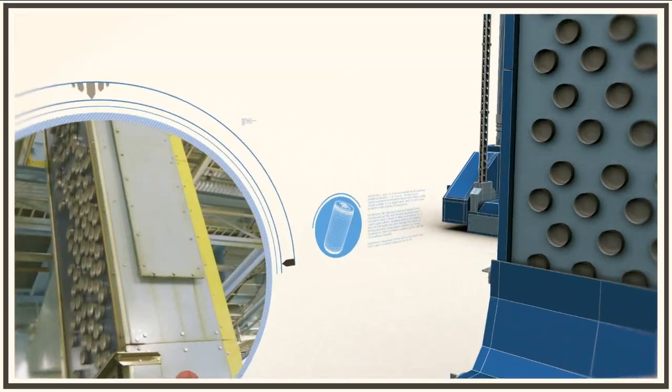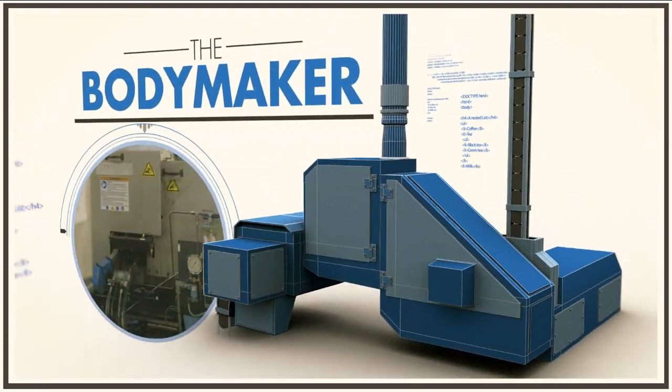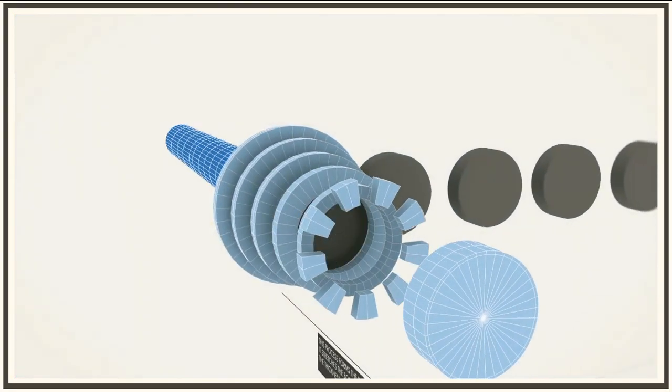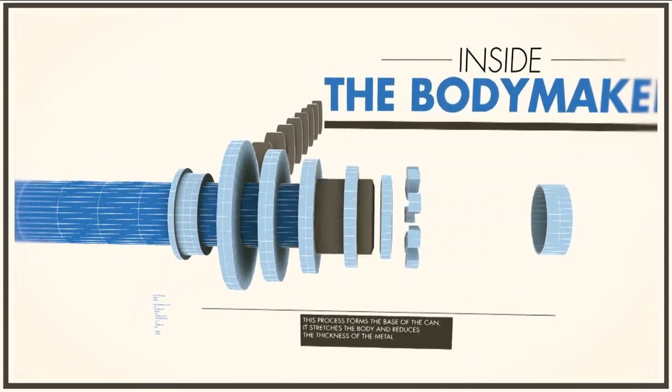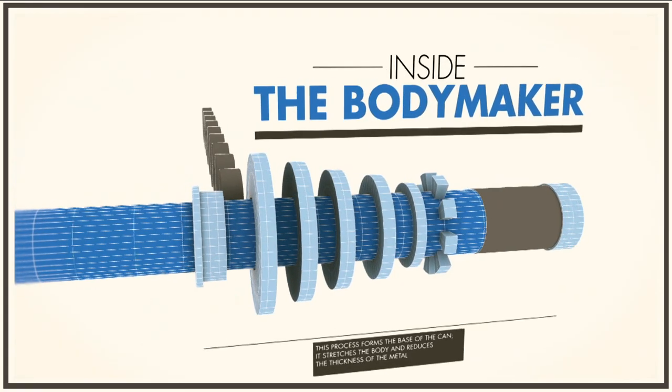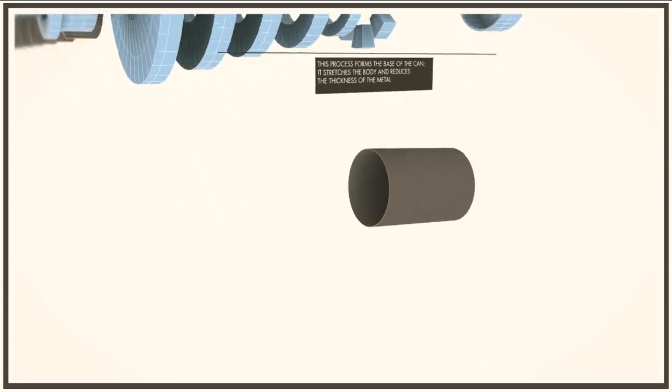From here, the cups pass through the body maker, where the can starts to take on its familiar shape. Each cup is forced at high speed through a series of precision rings, known as dies, each a little smaller than the one before. This process forms the base of the can.